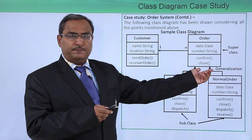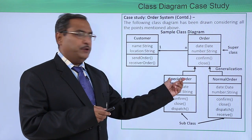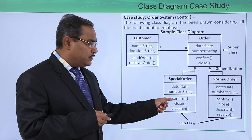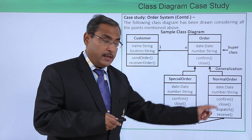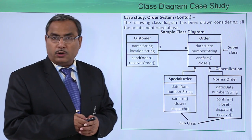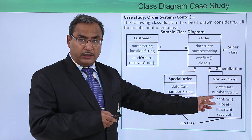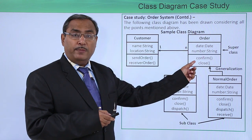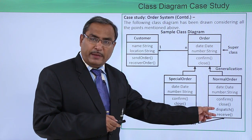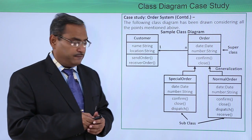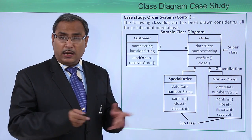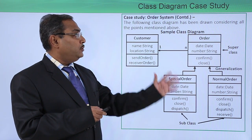From the Order class we inherit Special Order and Normal Order. In these subclasses, the confirm and close methods get their implementations — the required code is written under these methods. In addition, Normal Order has two extra methods: dispatch and receive. Special Order has one additional method: dispatch. These two classes are the subclasses, also known as derived or inherited classes, in this class diagram.